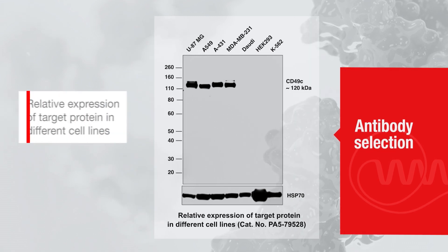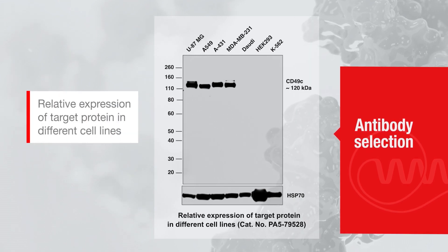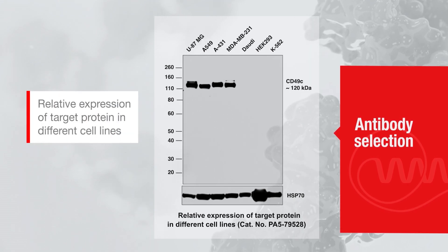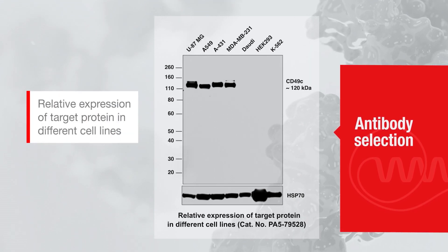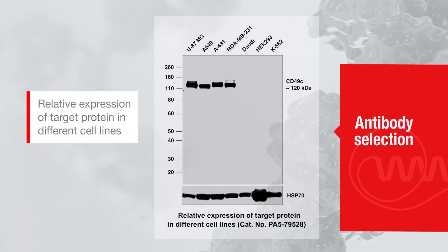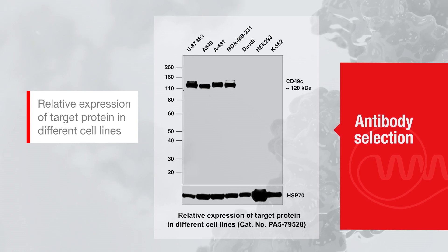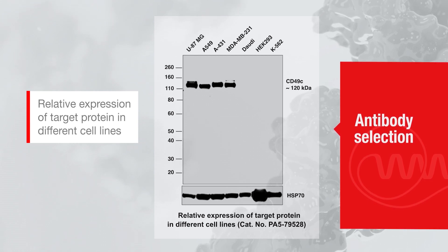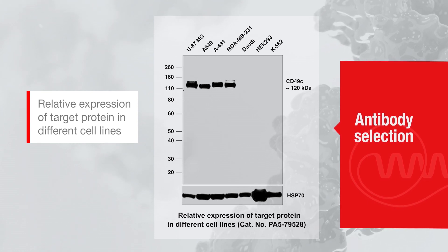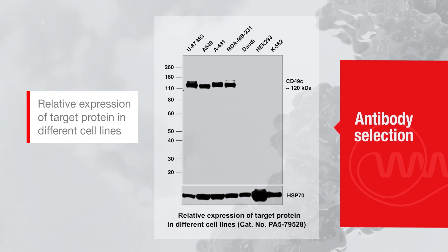Next, let's discuss some of the various methods we use to ensure specificity in Western blotting. One of our advanced verification specificity tests includes relative expression, to confirm antibody specificity using differential expression of the protein in cell models.